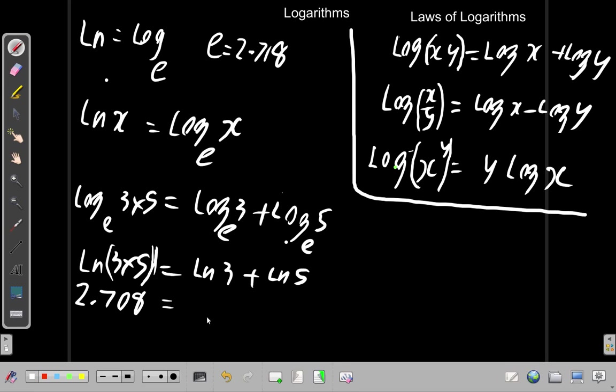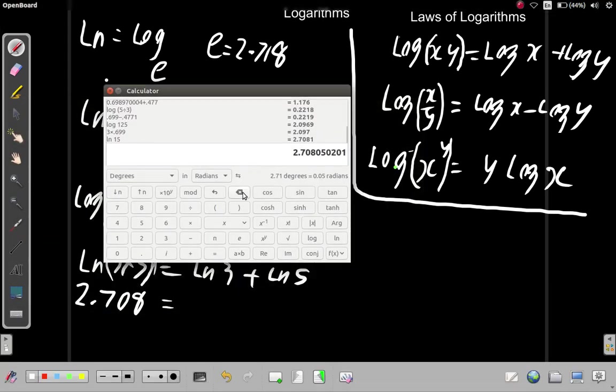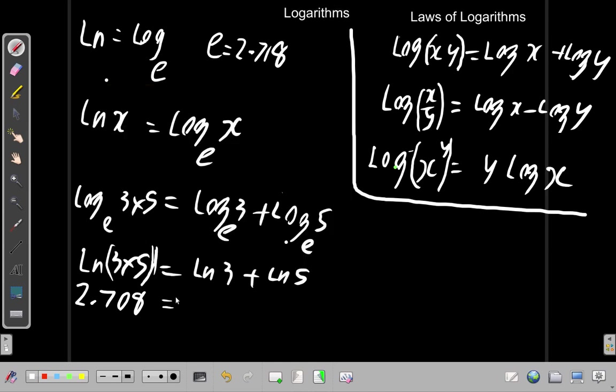What is ln 3? ln 3 equals 1.099. Let's round it off to that, 1.099.